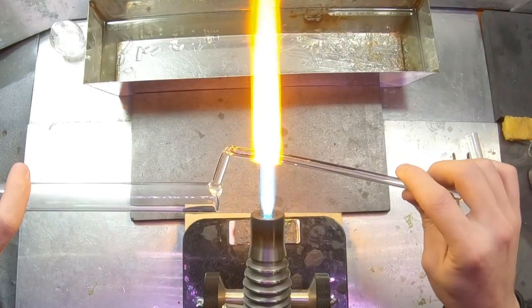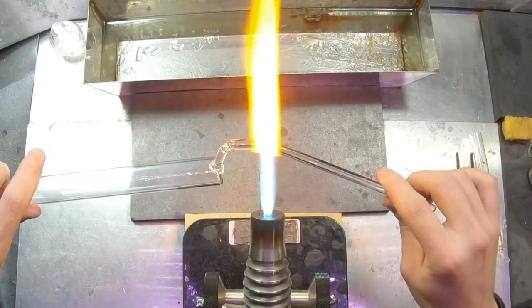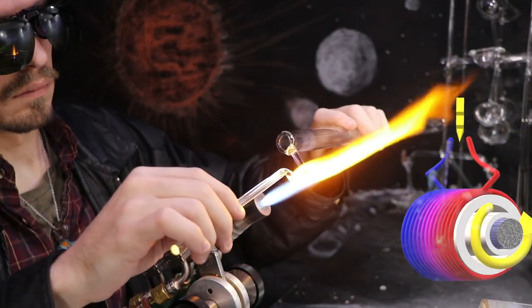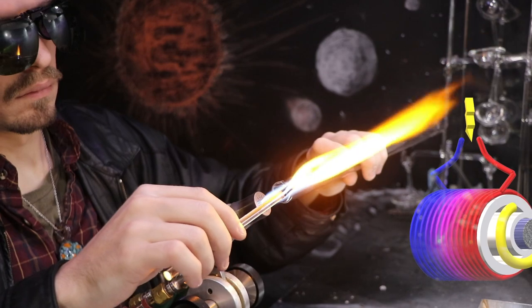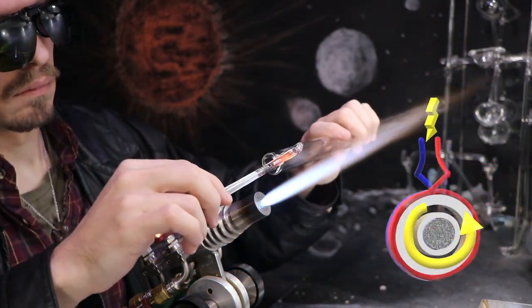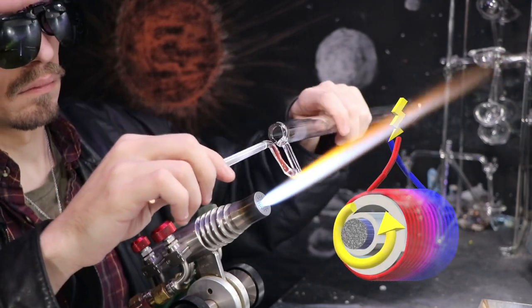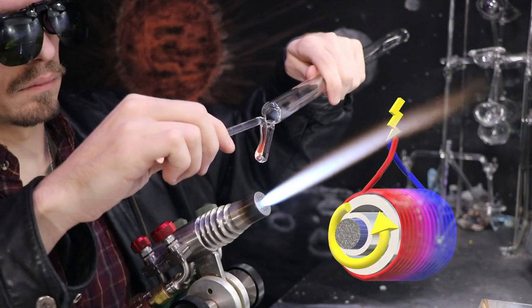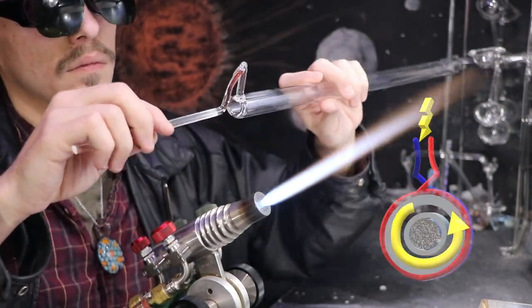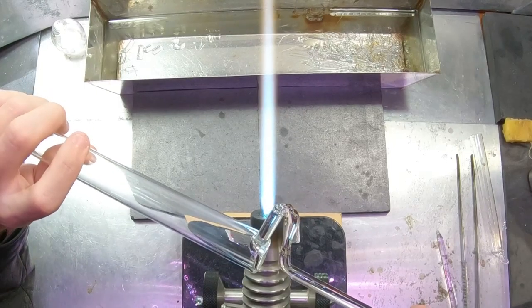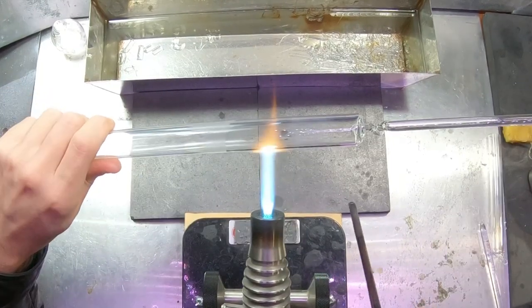And so I'm attempting to make here a very simple hand crank electric generator. This will be very similar to the electromagnet episodes, but instead of applying power to it to receive magnetism, I'm going to apply magnetism to receive power. A lot of times physics is backwards compatible like that, a certain symmetry.